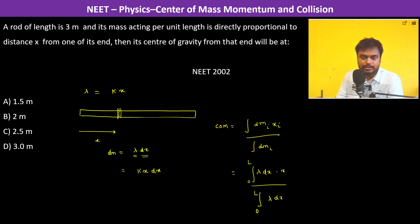Now lambda is kx dx, so therefore kx squared dx from 0 to L divided by integral from 0 to L of kx dx. See, this is the center of mass, and dm we got as kx dx.